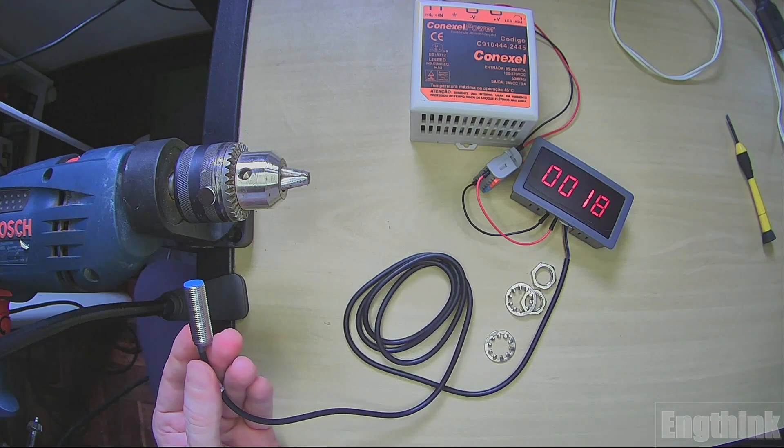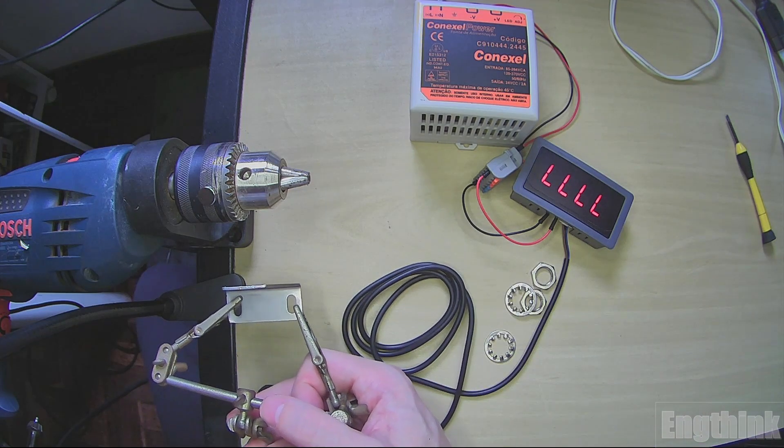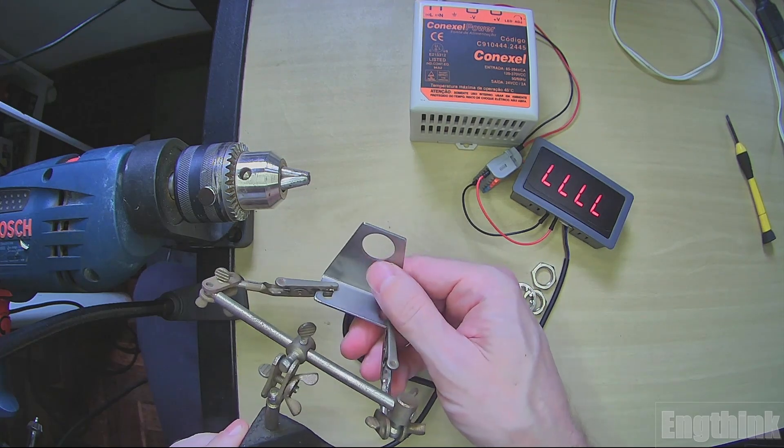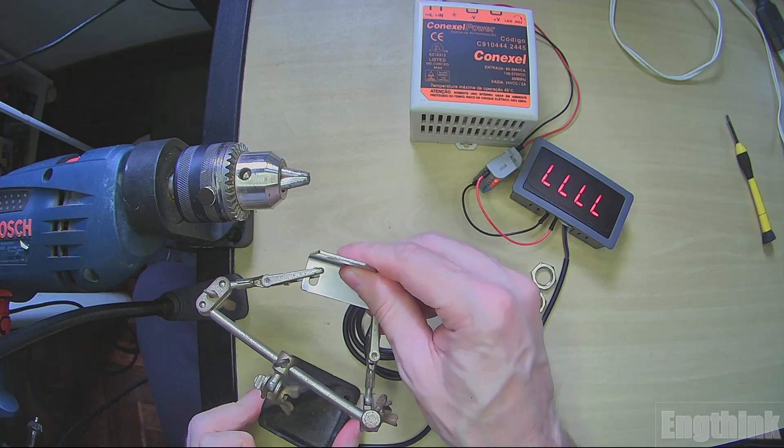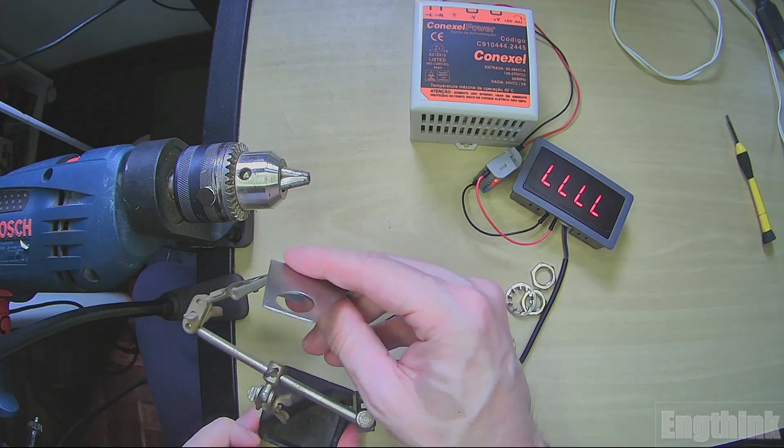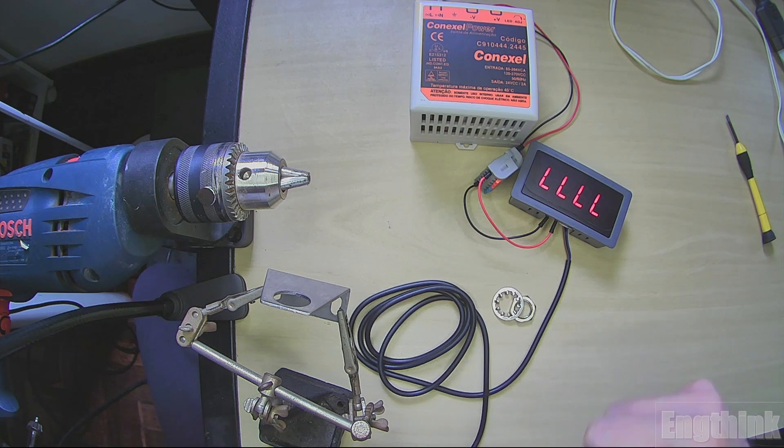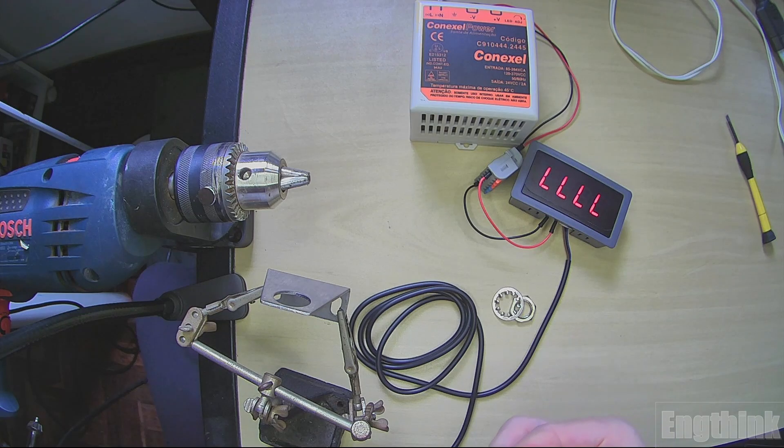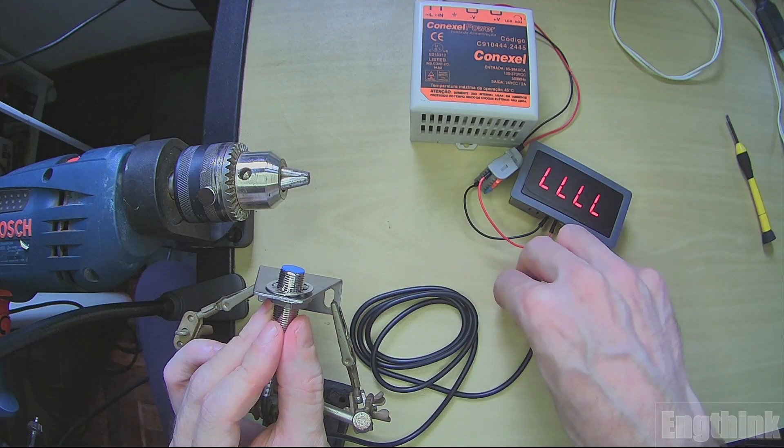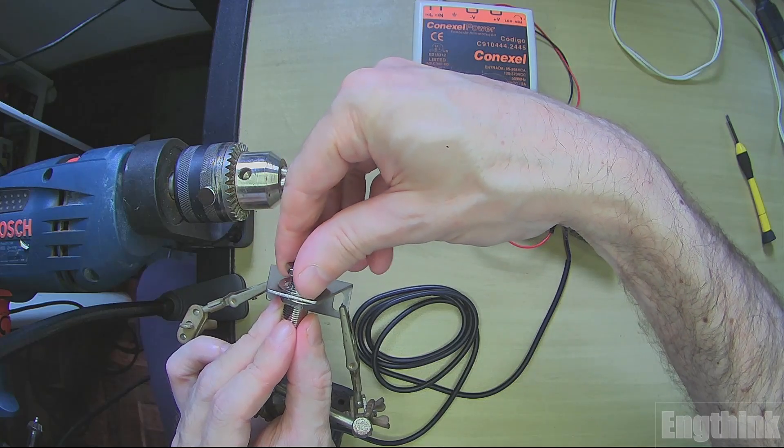So to make the detection instead of holding with my hand I will use this support right here. This bracket with this plate is proper for this sort of sensor. You can find it to sell, unfortunately it doesn't come together. You need to purchase separately. Then you put the first nut, the washer, put it in the hole, the second washer, and the nut.